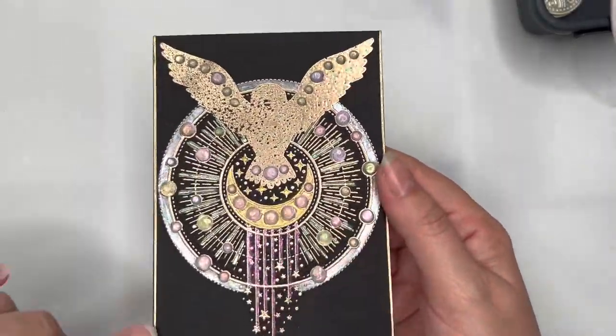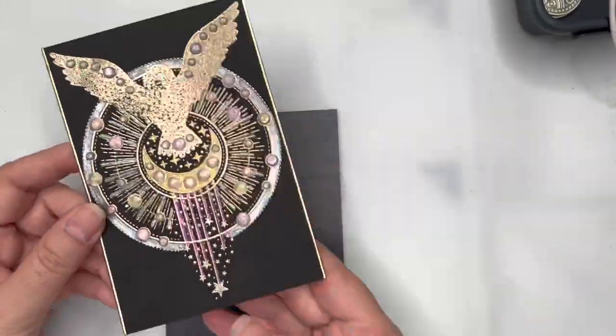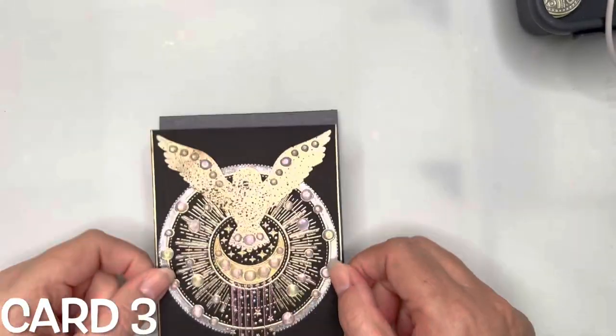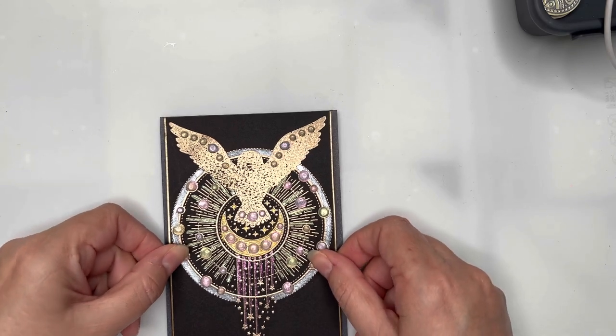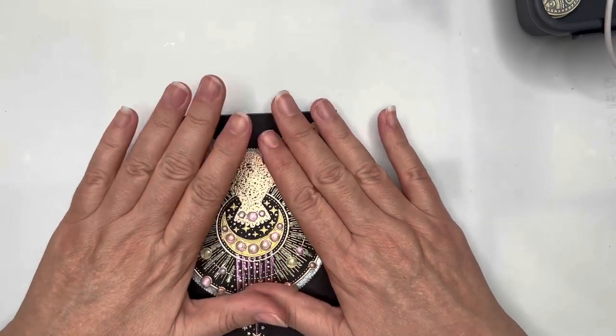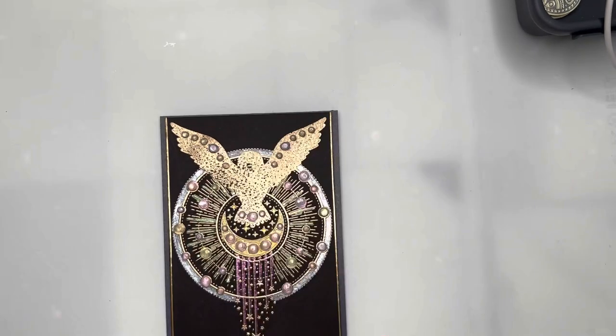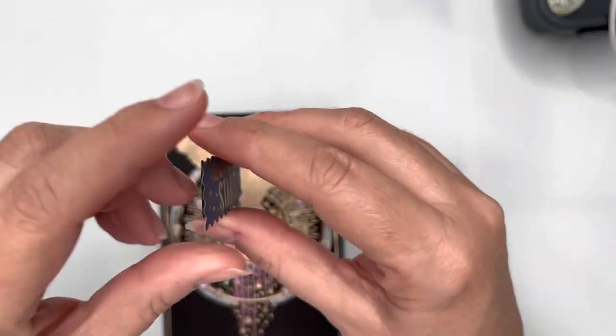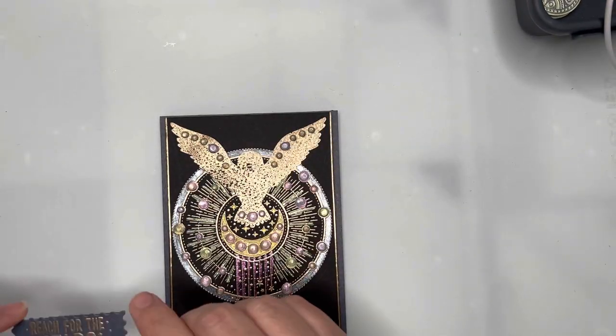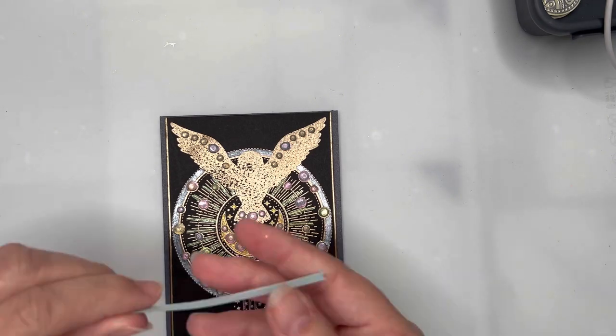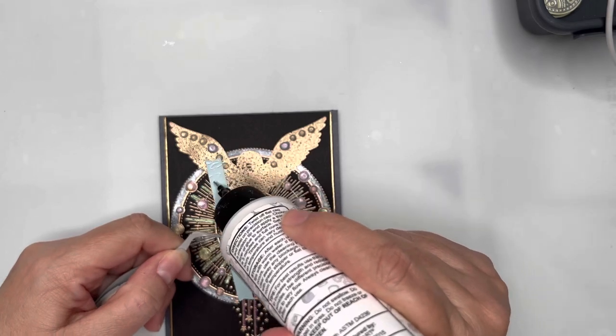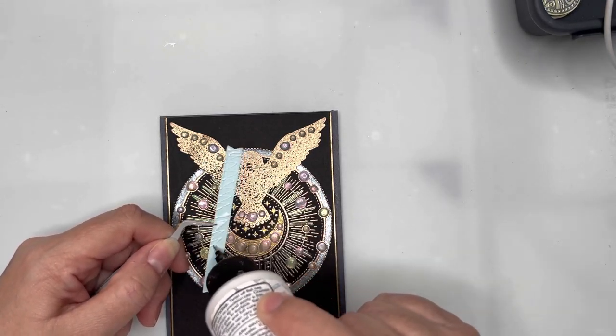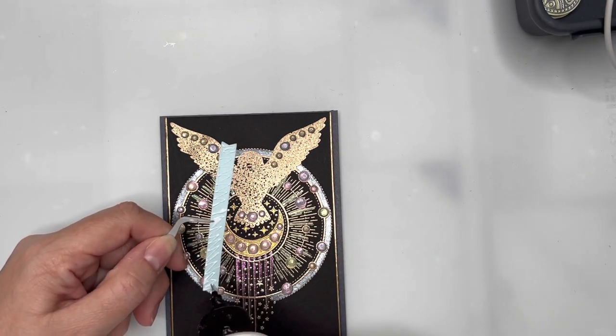Card number three: I'm using that large owl image and I've used some Love From Lizzie gold peel off stickers down both sides of the card to frame the image. I've popped that panel up on some black foam tape, and here is the sentiment that I've stamped out and heat embossed onto black card.